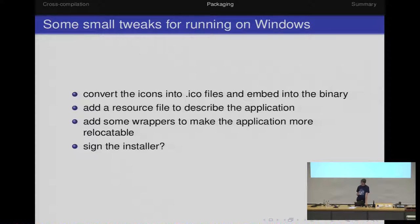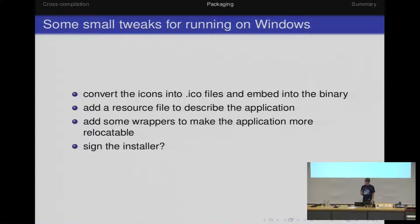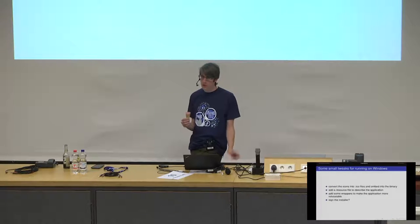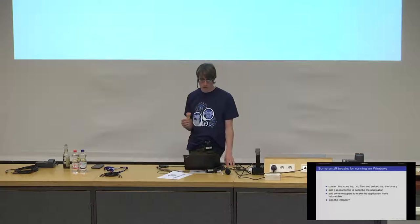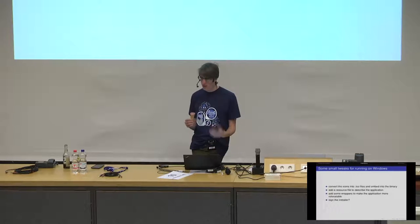You also probably have to worry about your application being relocatable. On Linux you don't generally do this — you have a well-defined prefix set at configure or install time, and you can hard-code all those paths. On Windows, you can't do that because you might be installing onto the C drive, into a user's home directory, or just copying the binary around. GLib doesn't really have full support for this, but with things like gResource you don't need to worry too much because you can build most things into the binary. It's mainly locales that you need to search for on disk. Pidgin and GIMP have done this for a long time, so you can look at what they've done.